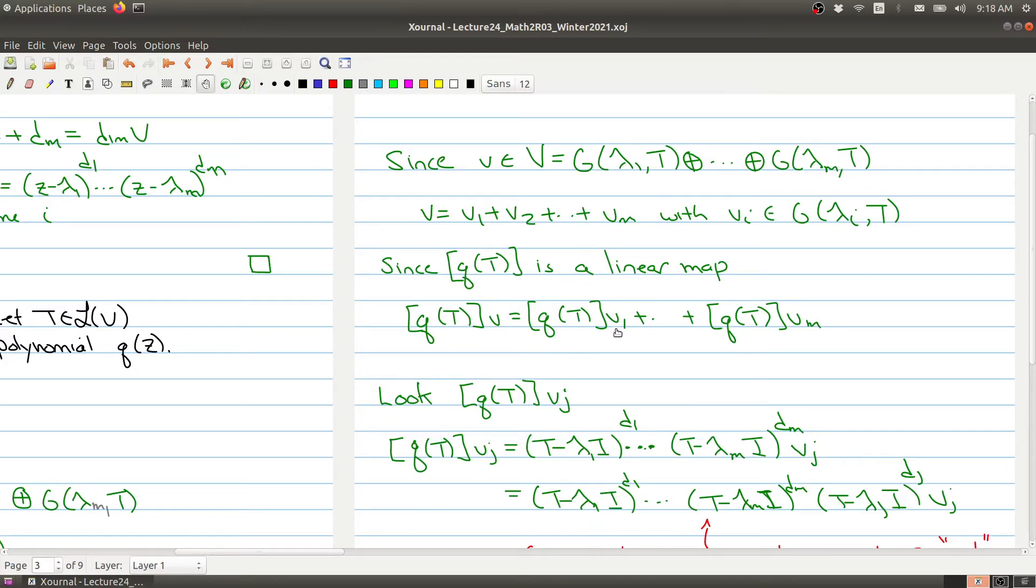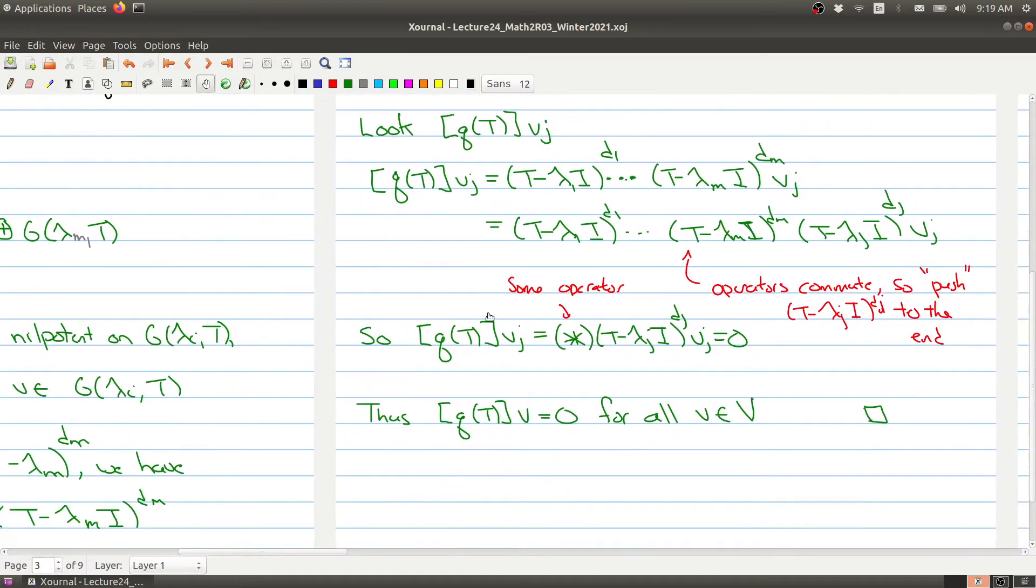That means if we go back to this, q(T) takes v₁ to zero, takes the next term to zero, takes each of these terms to zero. So our linear map takes any vector v in our vector space to zero. That ends the proof of the Cayley-Hamilton theorem.